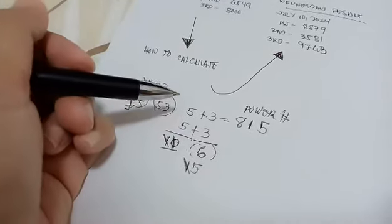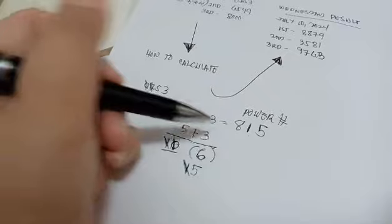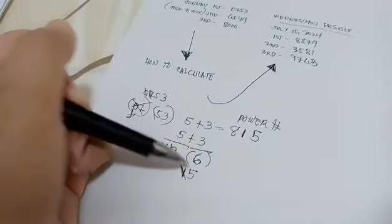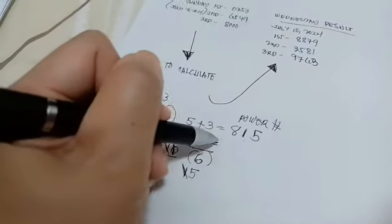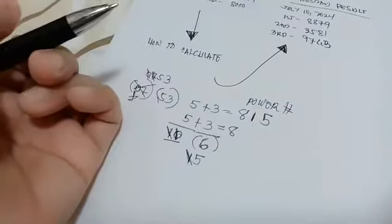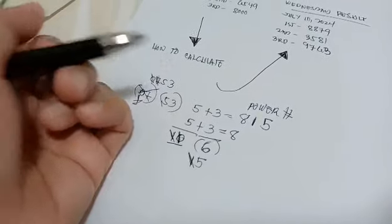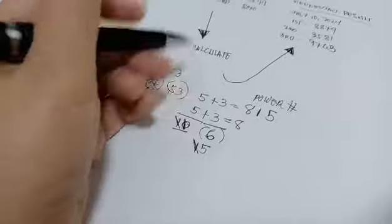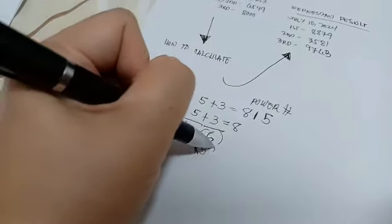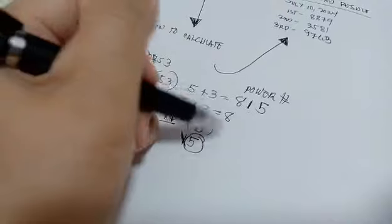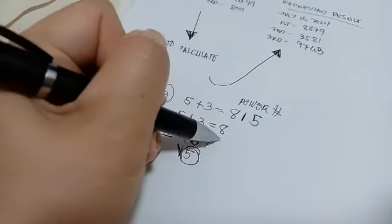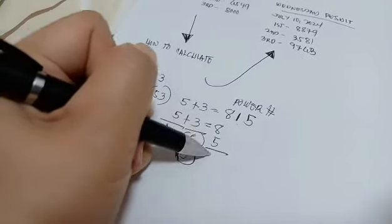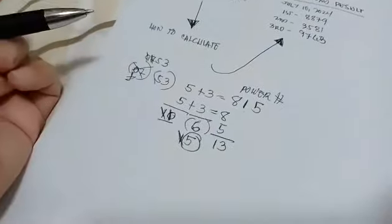So what I do, I need to add this 8 and 5, because here is number 8, right? And we're looking for number 3. So we need to add this here: 8 plus 5 is equal to 13.